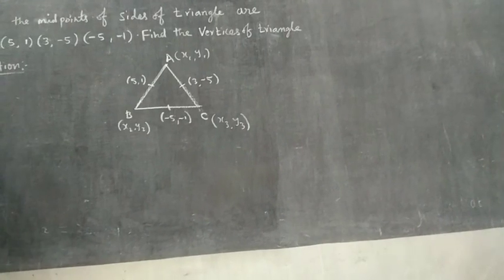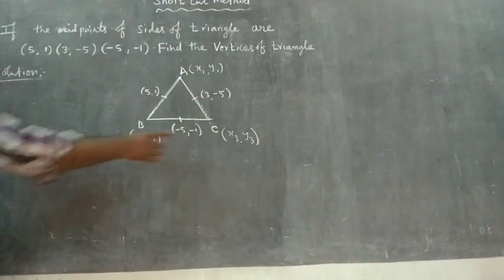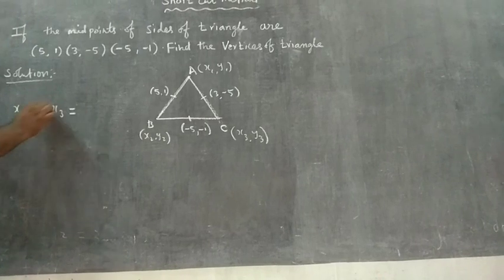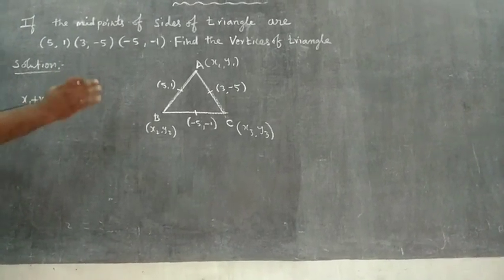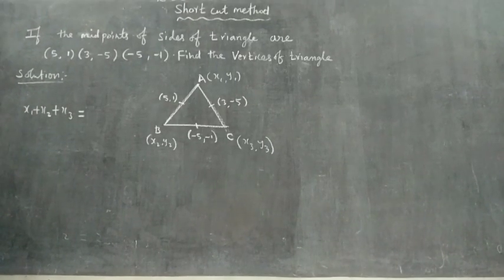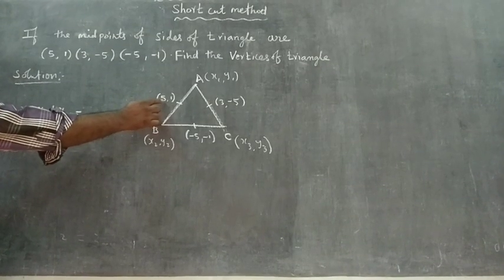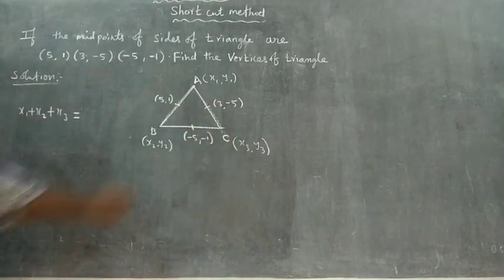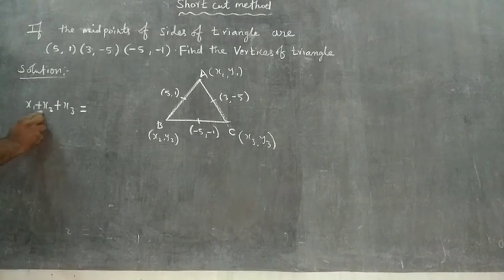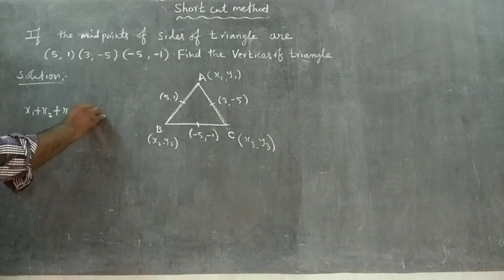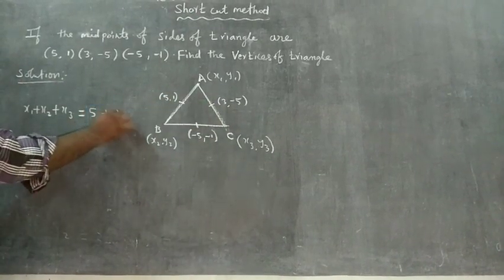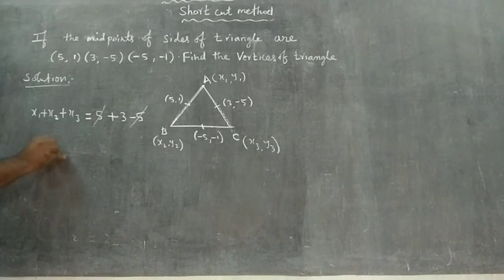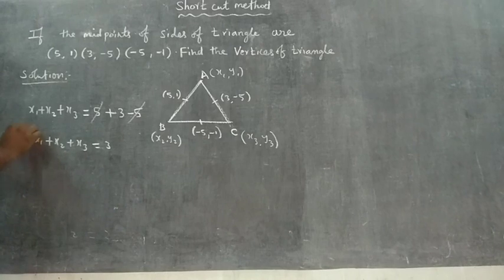Using the midpoint formula, the sum x1 + x2 + x3 equals twice the sum of the x-coordinates of the midpoints. Adding 5 plus 3 plus (-5), the x-values sum gives us x1 + x2 + x3 equal to 3.